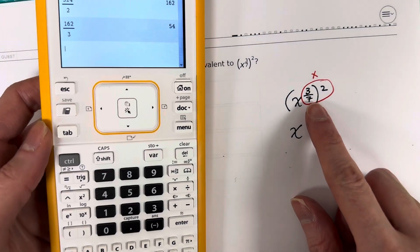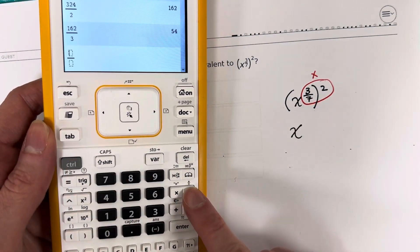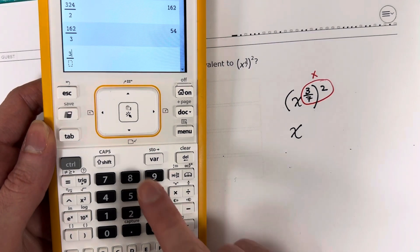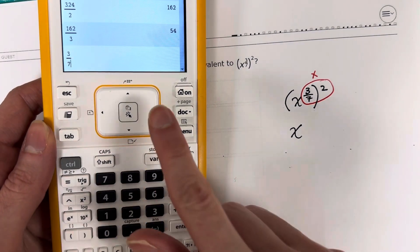So let's make a fraction. To make a fraction, it's control divide. Okay, you're going to put 3, go down 7, go to the right.